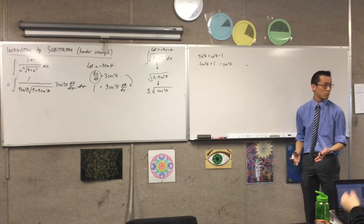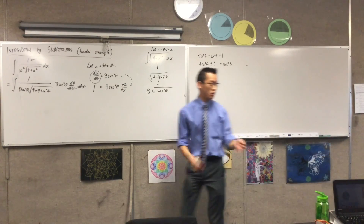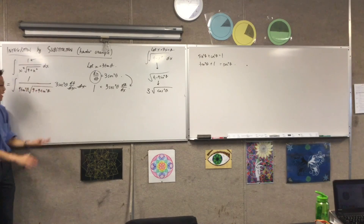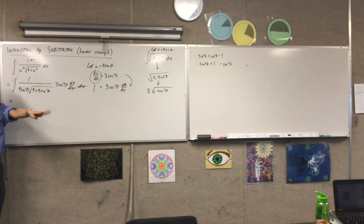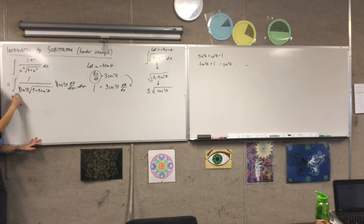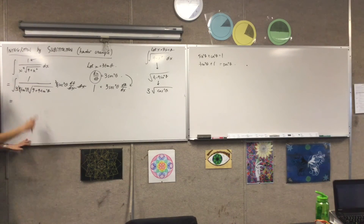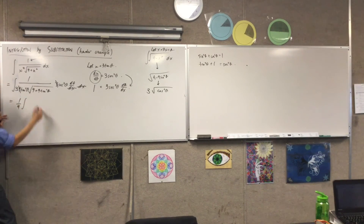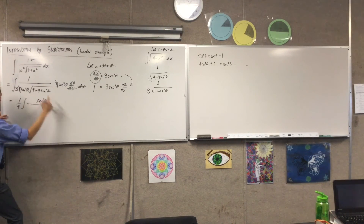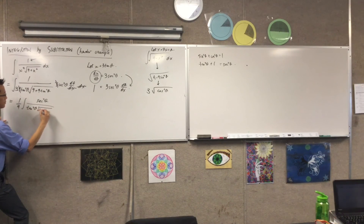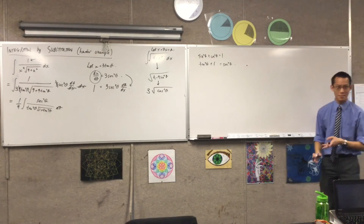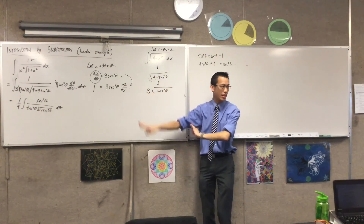How does it look? Is this all good? There's a 3 here and a 3 here — there's the 3 from the substitution and the √9 = 3. So I'm going to take both of those guys out the front, which leaves me with 1/9 out the front. And then I'll put the sec²θ on top. I can see I'm deliberately doing this quite slowly because there are all kinds of things that are going to cancel, and I don't want to muck them up.